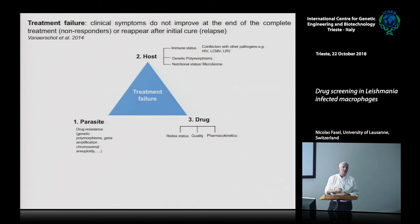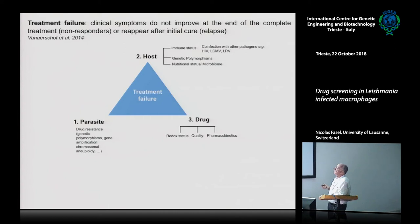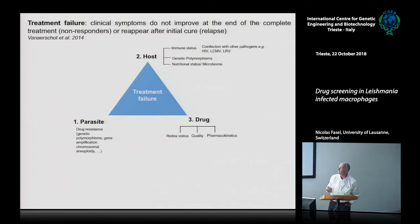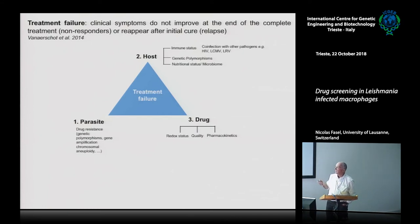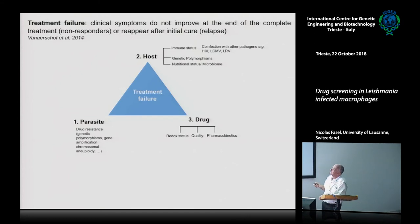But you should also consider the host cell: the immune status can influence drug response, as can host genetic polymorphism, nutritional status, and the microbiome. The drug quality itself matters too — leftover drugs can be oxidized and ineffective, allowing drug-resistant parasites to survive. Pharmacokinetics also play a role: if a drug is eliminated quickly, low drug levels will influence parasite survival.